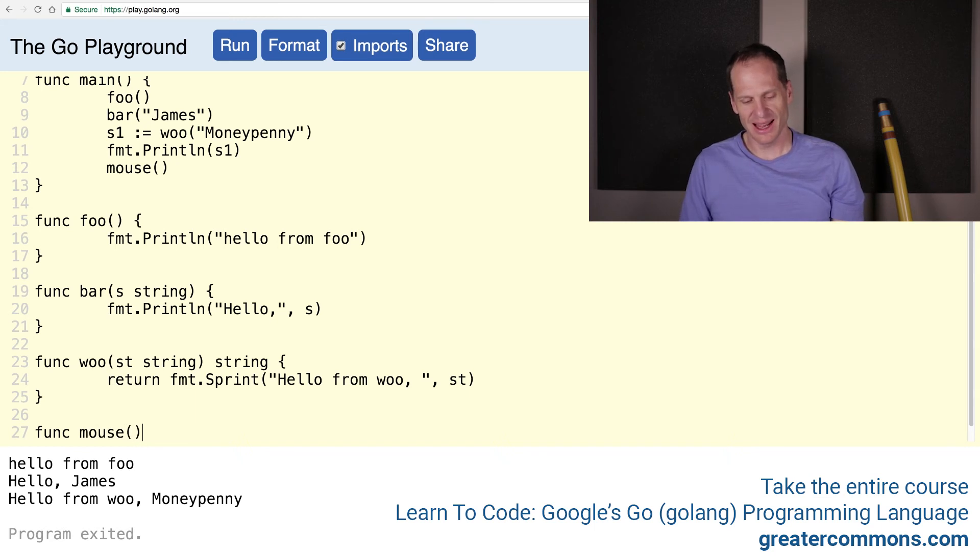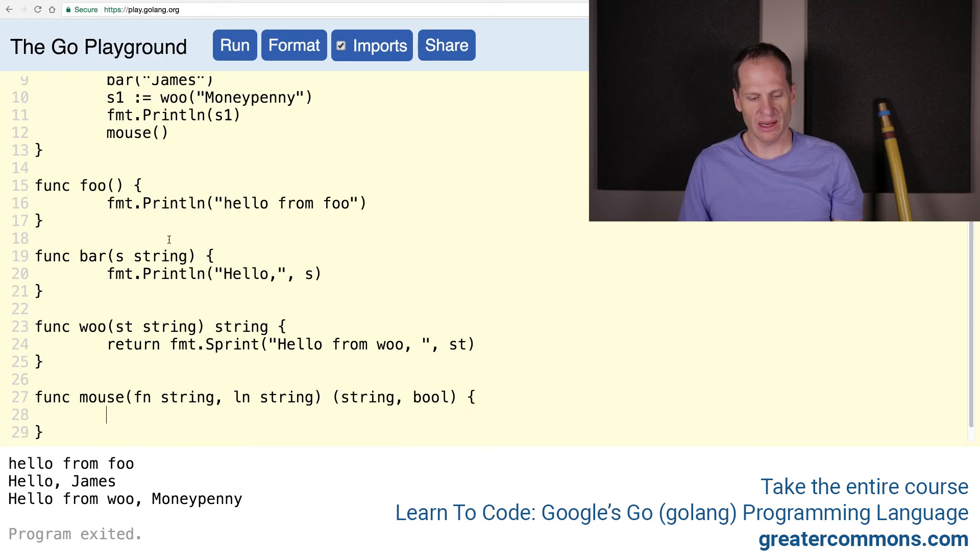So you could do it like that. We've seen that. Or you could be a little bit more clear and you could do it like that. And then it will return a string and a bool. And now we need to call that in. So we'll pass in Ian and we'll pass in Fleming.